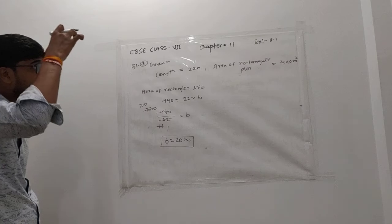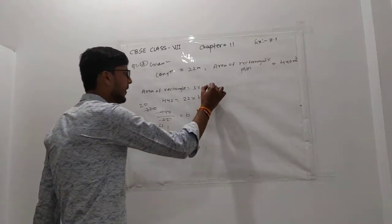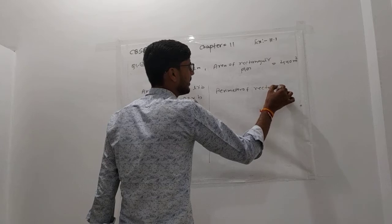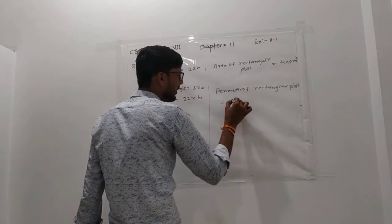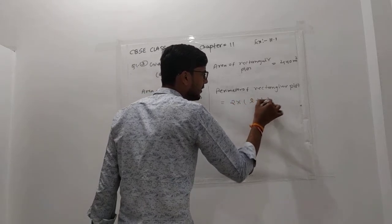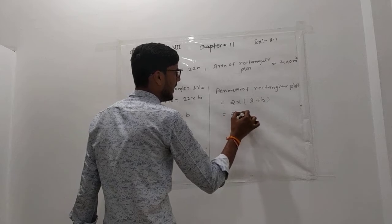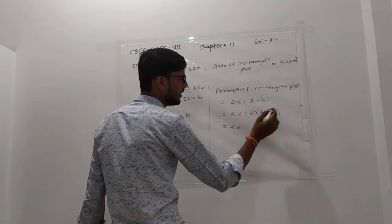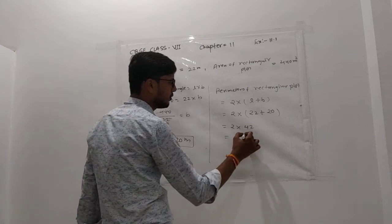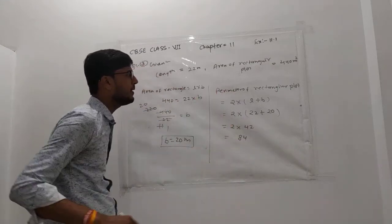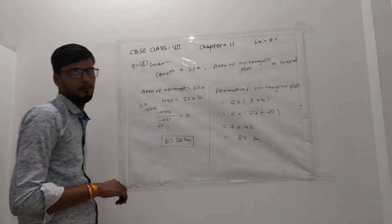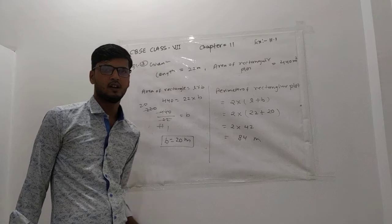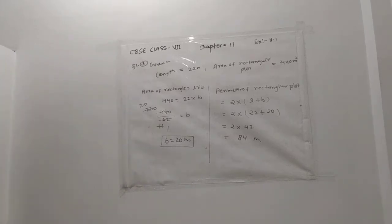Width of rectangular plot is 20 meters. Now also find the perimeter of the rectangular plot. Perimeter of rectangle is 2 into length plus breadth. So 2 into 22 plus 20 equals 2 into 42 equals 84 meters. So perimeter is 84 meters. Width is 20 meters and perimeter of rectangular plot is 84 meters. Thank you.